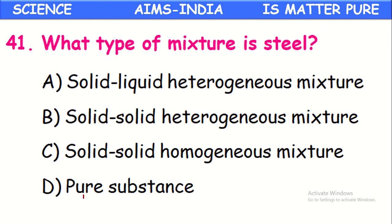What type of mixture is steel? Steel is a mixture of iron with other metals like nickel, chromium, and some carbon. It is a mixture of solid in solid and forms a homogeneous mixture. So steel is a solid-solid homogeneous mixture.